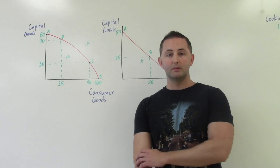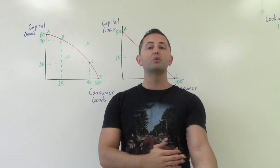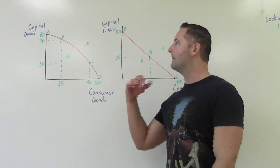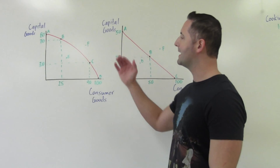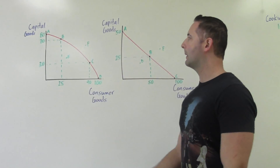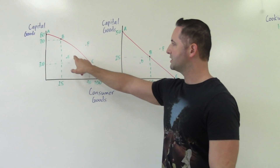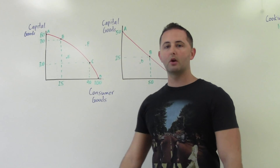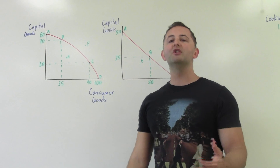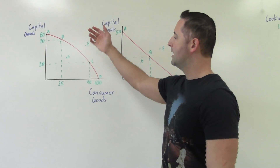What this curve shows us is merely what is possible — like the name says, production possibilities curve. It is not telling us what an economy should make or what is the best use of their resources, merely what they can do. They can operate anywhere along the curve, or anywhere inside the curve, such as point E.